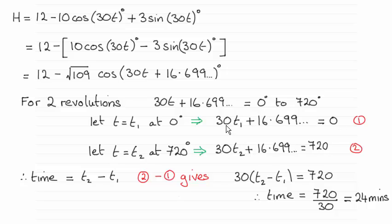I'm pulling out 30 as a common factor between the t's. So we've got 30 bracket t2 minus t1 when I subtract here. The 16.699 and so on cancels out and it just leaves me with 720 minus 0 which is 720.